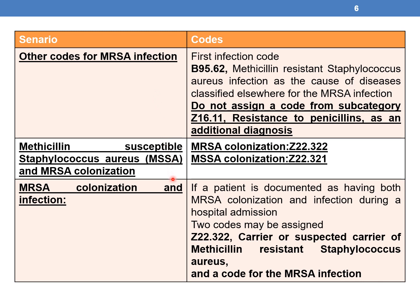Guideline 3 — MSSA and MRSA colonization: When colonization is documented, assign Z22.322 for MRSA colonization and Z22.321 for MSSA colonization. Guideline 4 — MRSA colonization and infection: If a patient is documented as having both MRSA colonization and infection during the hospital admission, two codes may be assigned: Z22.322 for the carrier status and the code for the MRSA infection. The infection code is the principal diagnosis (PDX), followed by the carrier code.